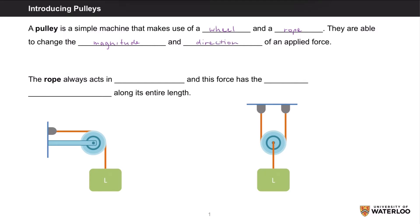The two images below are examples of some ways pulleys can be used. One thing to note is that the rope will always act in tension and the magnitude of the tension force will be the same across the entire length of the rope.